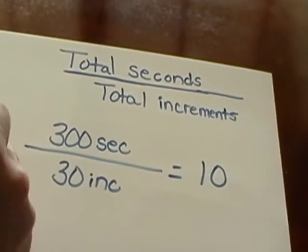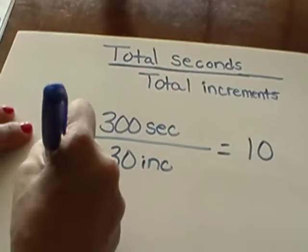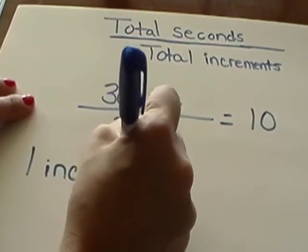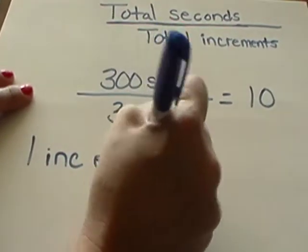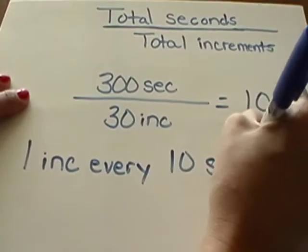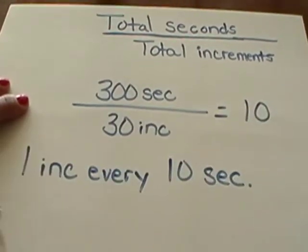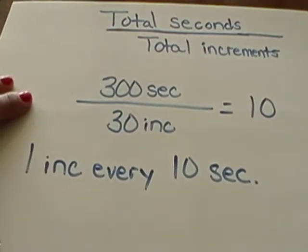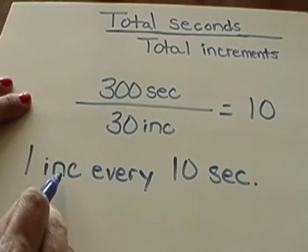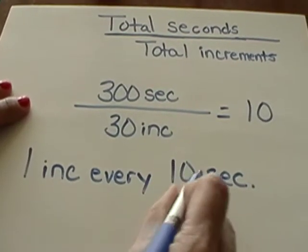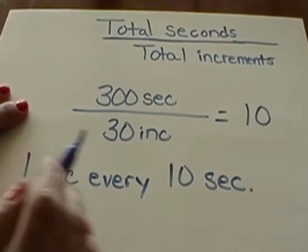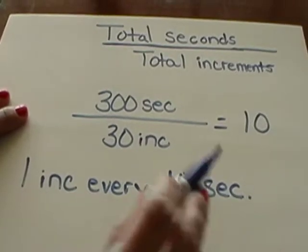So we would give one increment every ten seconds. To get it correct on the test you must write 'one increment every ten seconds' so that we know you're talking about seconds.